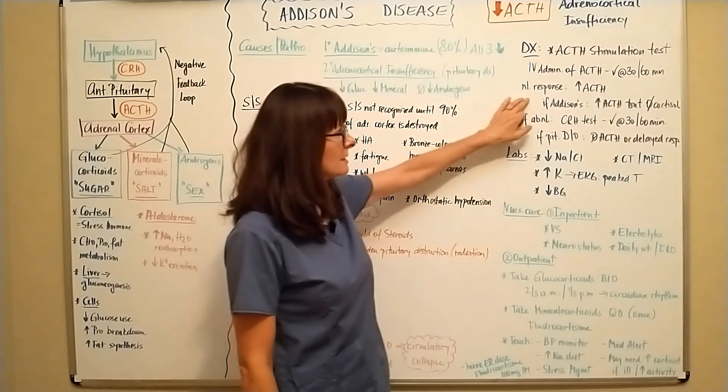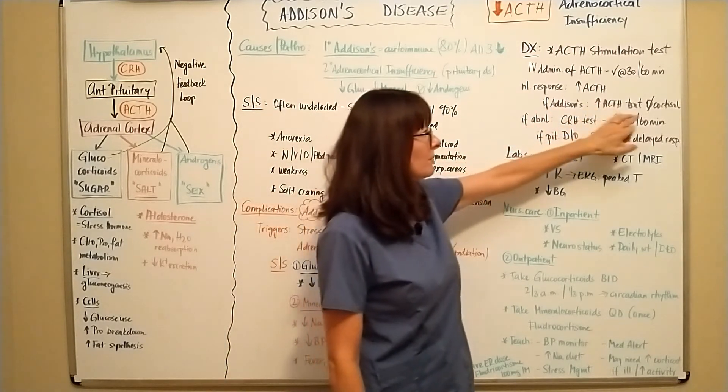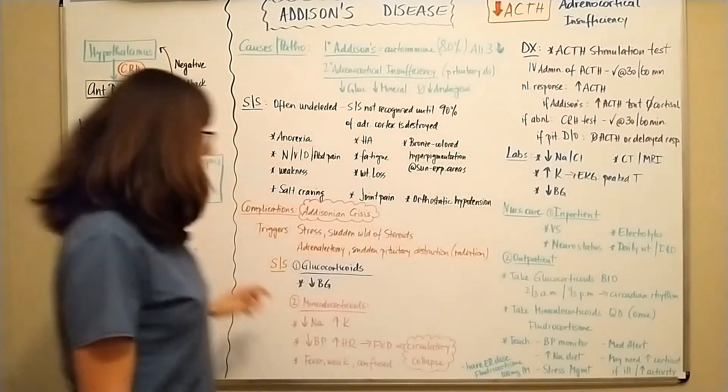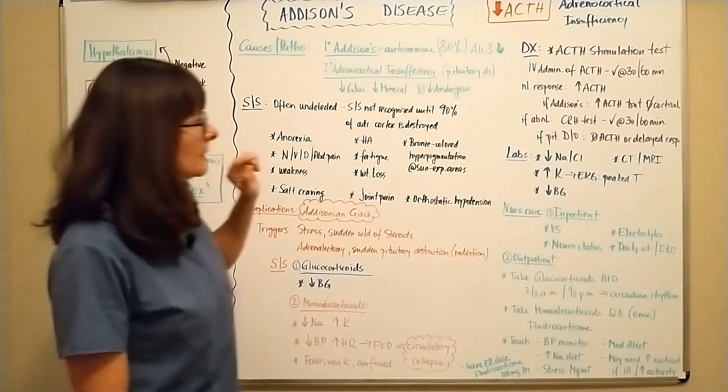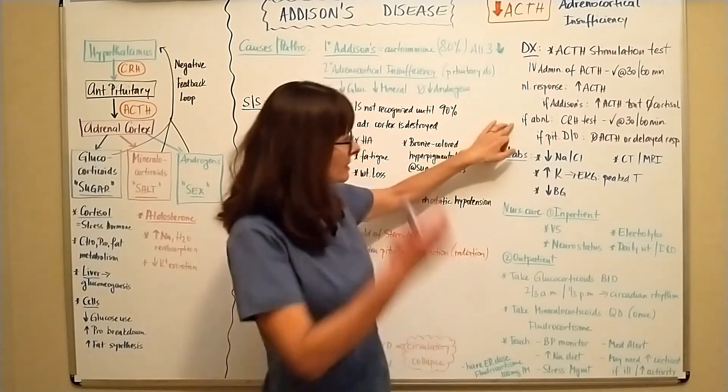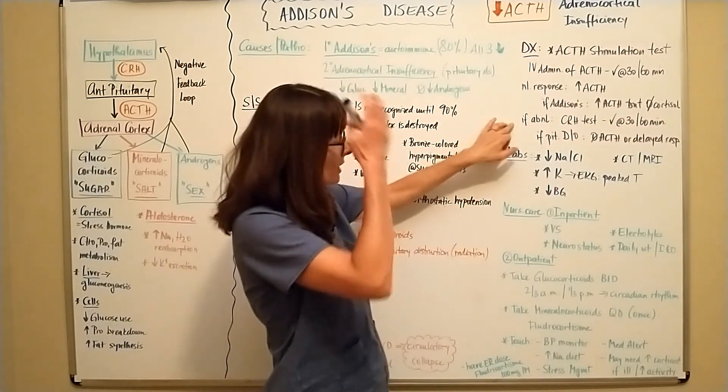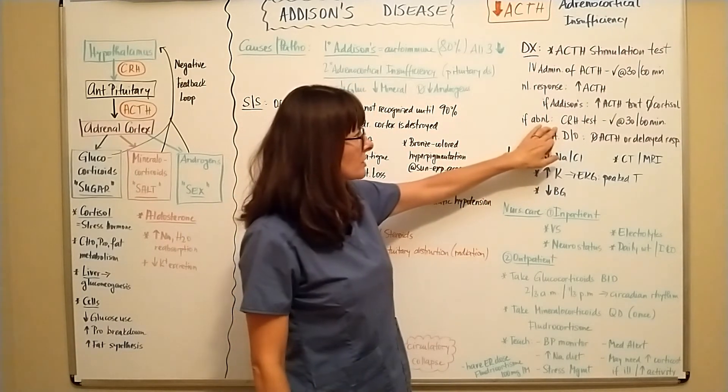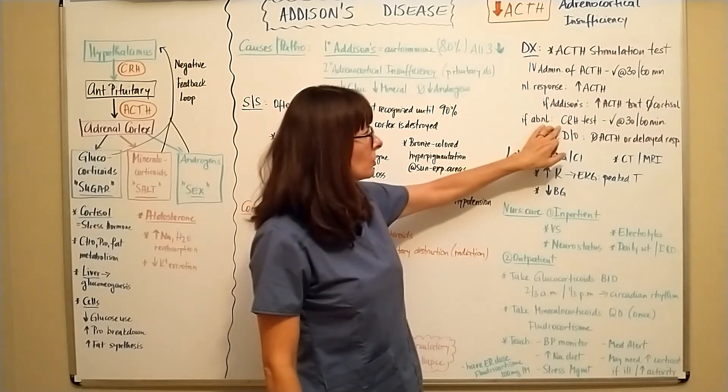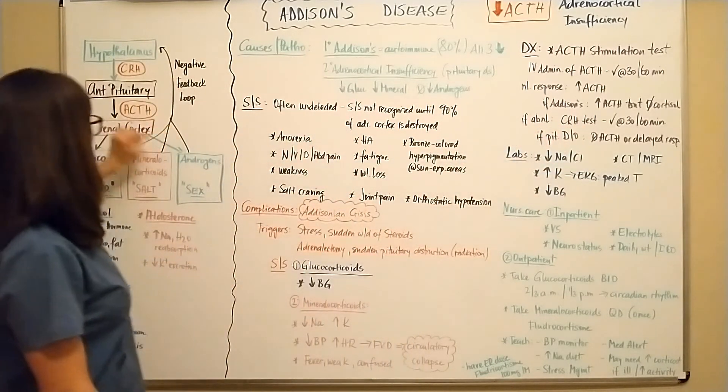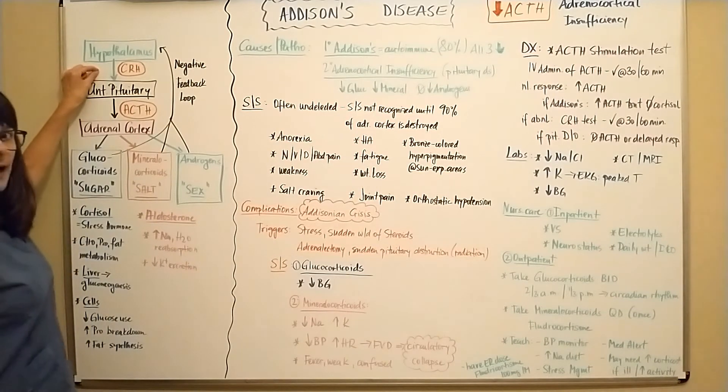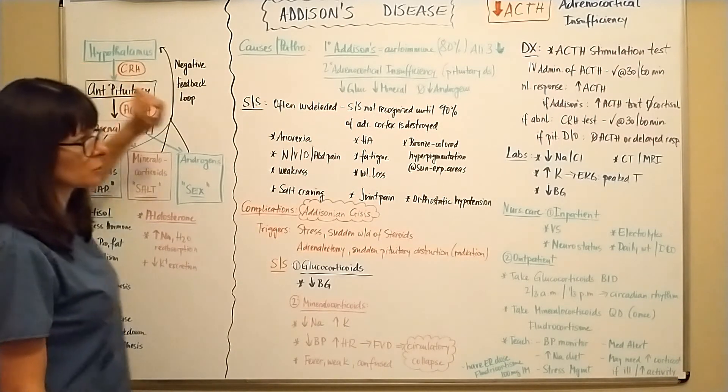But if there's Addison's disease, the ACTH will go up, but we won't produce the cortisol here. So we won't be able to measure that. If there's an abnormal test right here, then we can also test the corticotropic releasing hormone that would basically go up a step here and check if the hypothalamus is working on the pituitary.